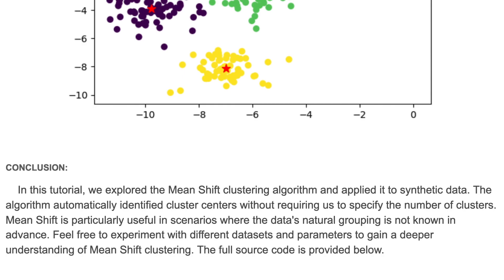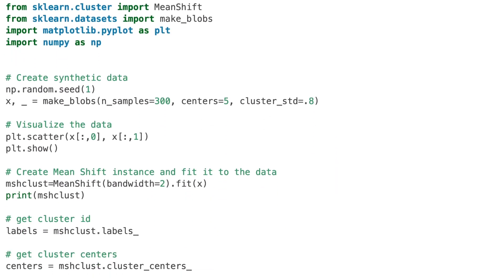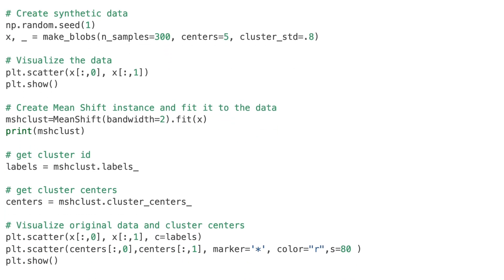In this tutorial we explored the MeanShift clustering algorithm and applied it to synthetic data. The algorithm automatically identifies cluster centers without requiring us to specify the number of clusters. MeanShift is particularly useful in scenarios where the data's natural grouping is not known in advance. You can experiment with different datasets and parameters to gain a deeper understanding of MeanShift clustering. The source code is provided — please visit my website to get all the source code and materials covered here. Please subscribe to my channel and hit the like button if you enjoyed this video.